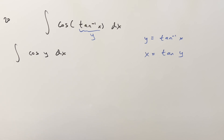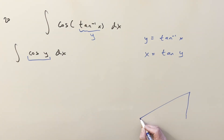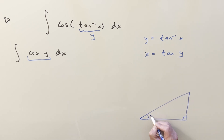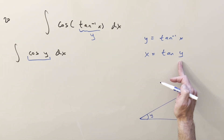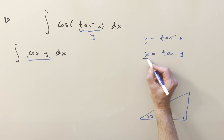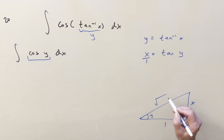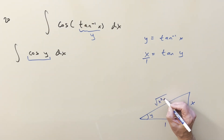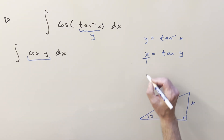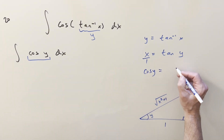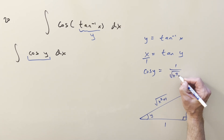But I don't want to mix variables in the same integral, so let's get an expression for cosine of y. Let's draw a right triangle. Using this equation, our angle is y, and tan(y) equals opposite over adjacent — so we look at it like x over 1. Using the Pythagorean theorem to find the third side, we get √(x²+1). So cosine of y is adjacent over hypotenuse, which gives us 1 over √(x²+1).